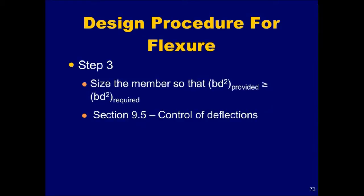The third step in the procedure is to size the member so that the provided Bd squared is greater than or equal to the required Bd squared, determined in step 2. It is clear that there are an infinite number of solutions for B and D, based on the equation presented in step 2. In certain instances, architectural or other limits may restrict B or D to certain values. This narrows down the choices considerably. Without such restrictions, it is important to consider the deflection requirements of section 9.5.